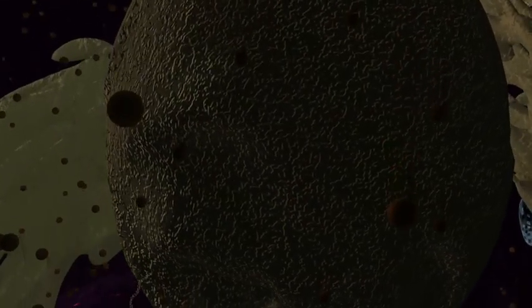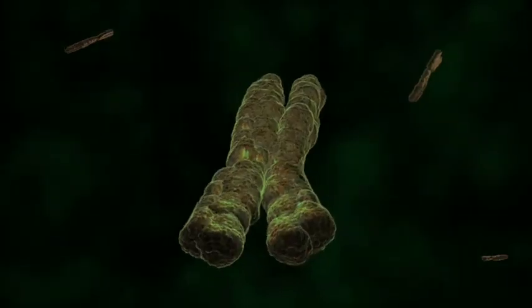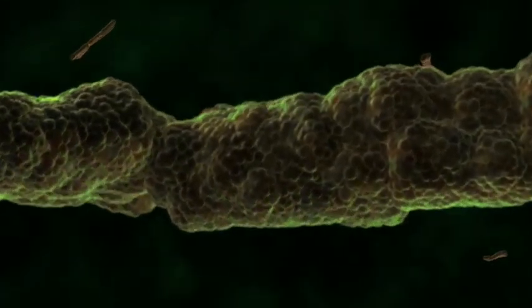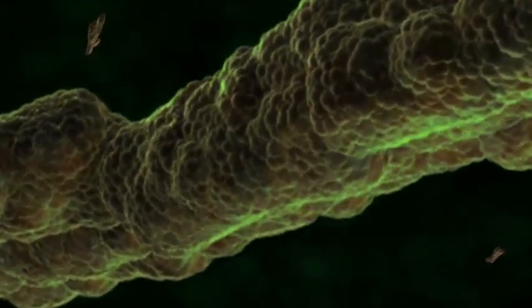But our destination is still ahead, the very heart of the cell. This is the nucleus. Penetrating the nucleus wall, we encounter 23 pairs of DNA molecules. These are your chromosomes.